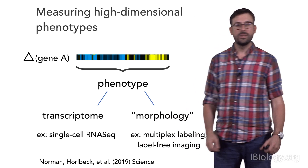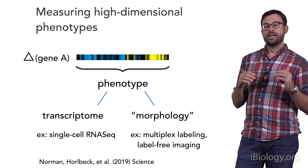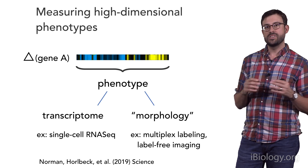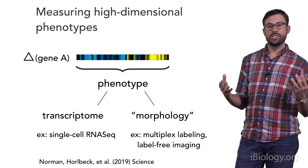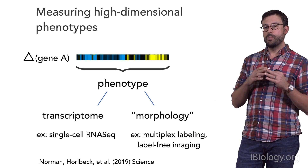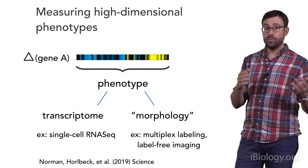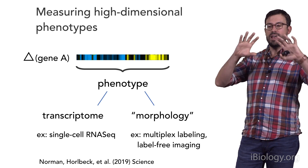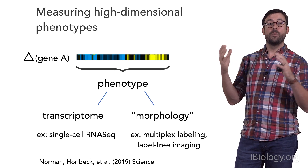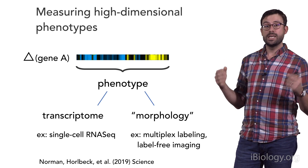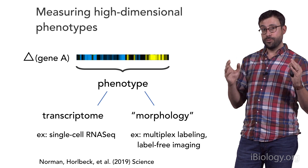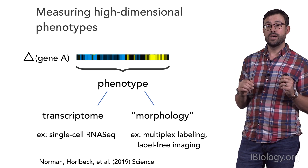There's a lot of interest in using the transcriptome of perturbed cells as a very high-dimensional phenotype. Methods exist today that couple CRISPR-based perturbation and single-cell RNA-seq to read perturbation and transcriptome in the same high-throughput experiment. There are also image-based methods that allow very high-dimensional information about cell states — measuring cell morphology using multiplex labeling approaches, but also label-free imaging such as brightfield or phase imaging — using machine learning to interpret what that tells us about the state of a cell and transform it into a high-dimensional phenotype.